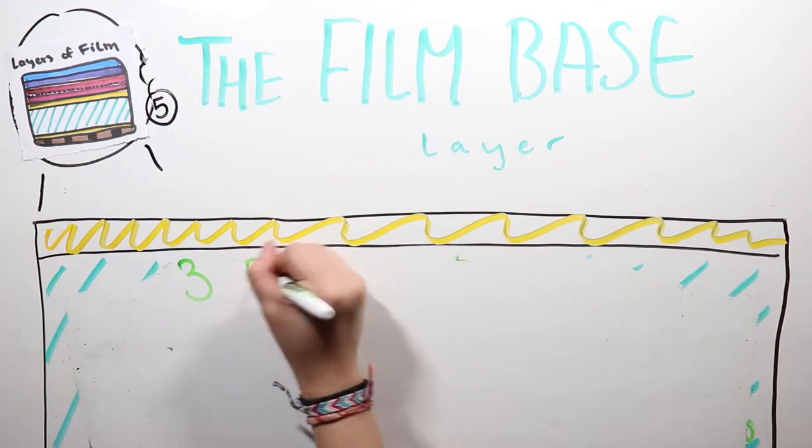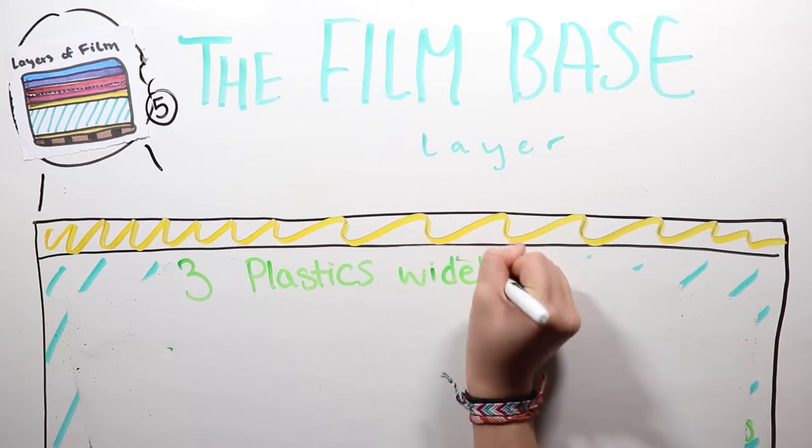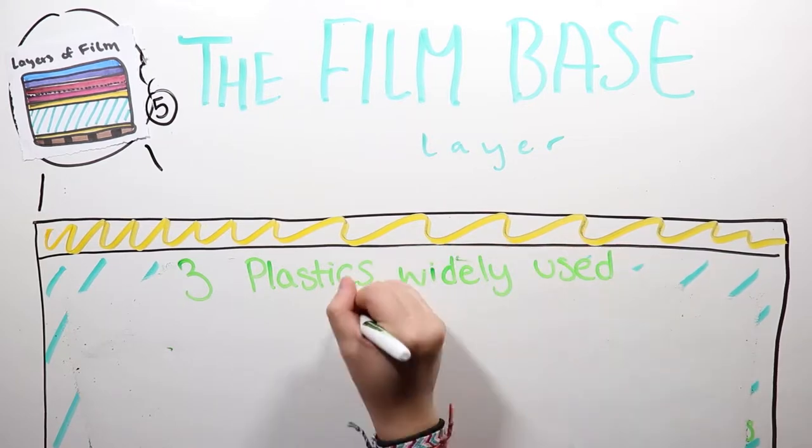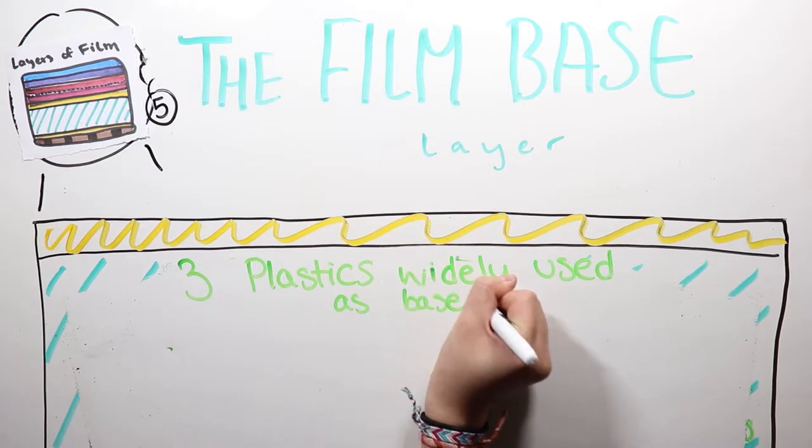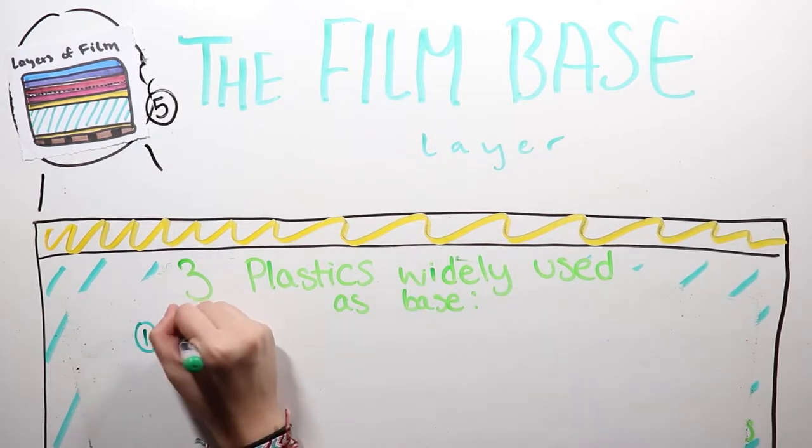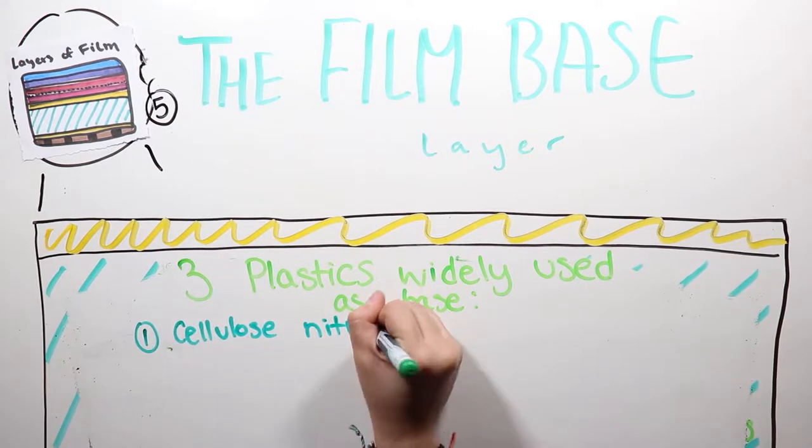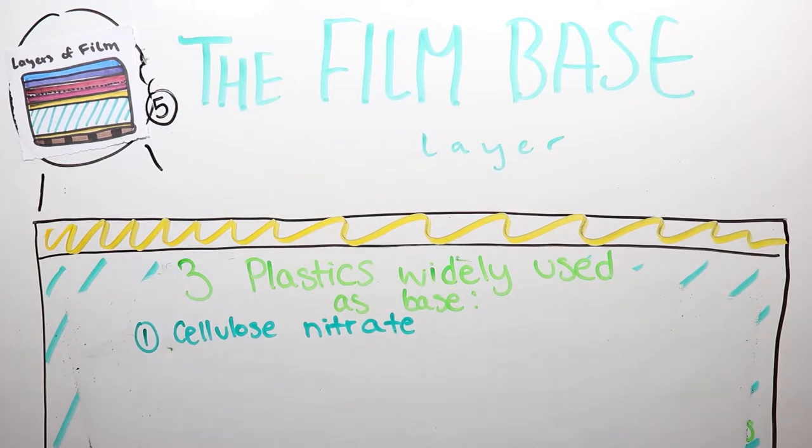There are three plastics that are widely used as a picture film base. Cellulose nitrate, which is one of the first materials used. This continued into the 1950s because it was highly flammable. Cellulose nitrate is chemically unstable if stored in conditions that are too damp—it can start decomposing. Or if it's too hot, it can self-ignite.